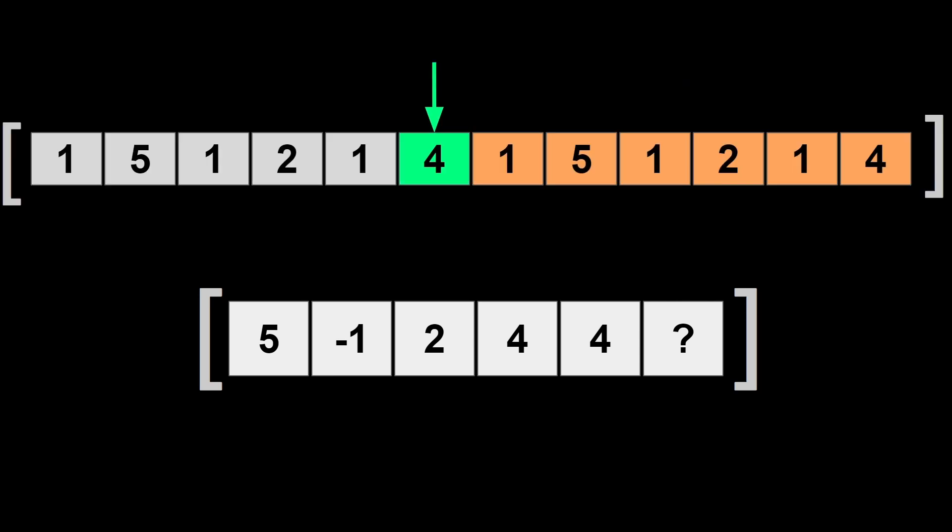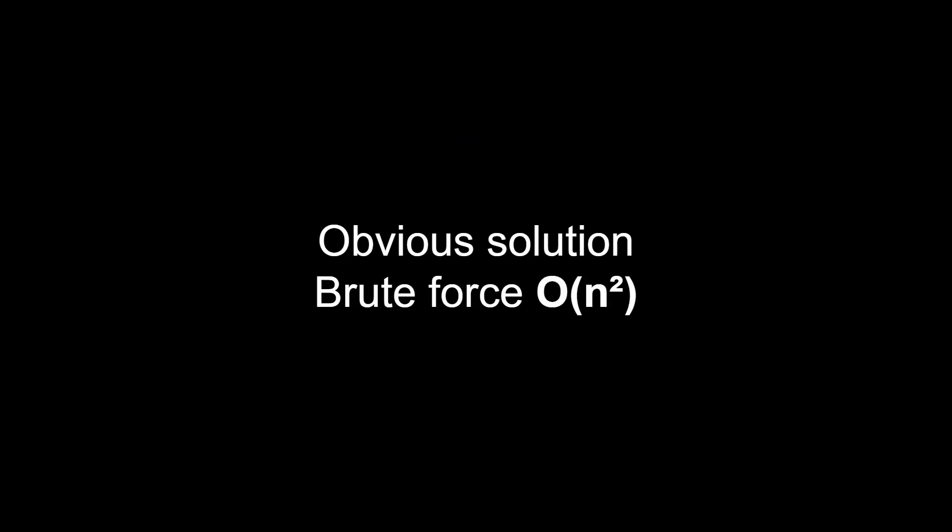One trick we can use when dealing with a circular array is to copy the array at the end, so we can keep looking to the right and find the next greater element of 4, which is 5. There's an obvious brute force solution in O(n²). It's obvious because that's how a human would do it.